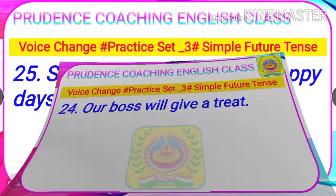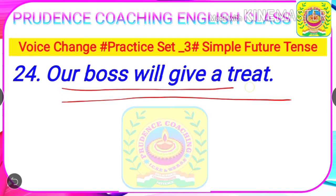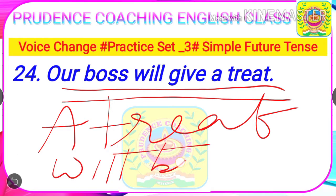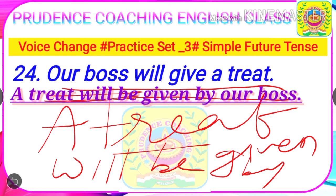The time is finished. Now the answer — Our boss will give a treat. The subject is 'a treat'. According to the subject you have to use the verb 'be', so 'will be'. A treat will be given by our boss. The verb transformation is: give, gave, given. So the final answer is: A treat will be given by our boss.